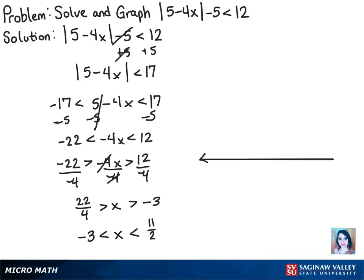Now graphing this, we want to plot negative 3 and 11 halves. We know that the bubbles will be hollow since there's no equal to bar underneath the sign. And since x is in between those values, we will shade the area in between negative 3 and 11 halves.